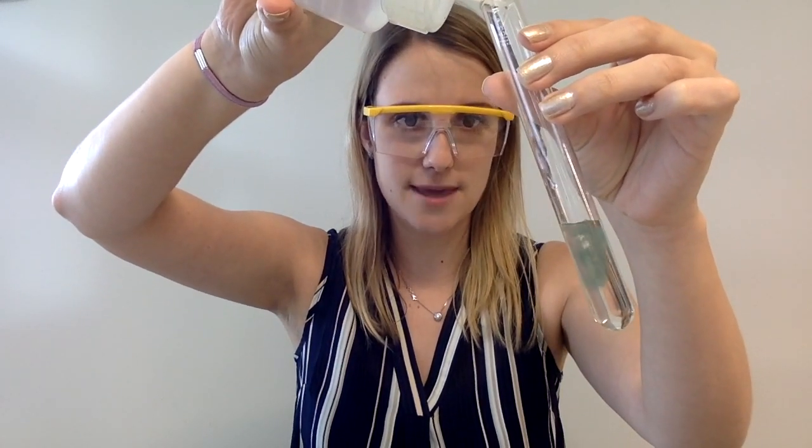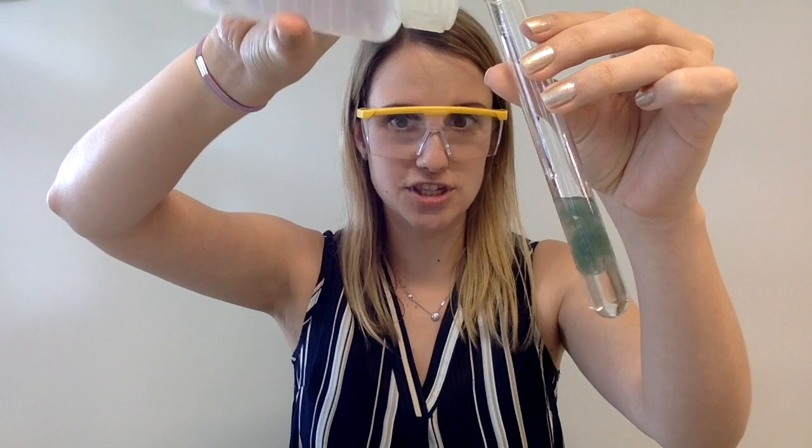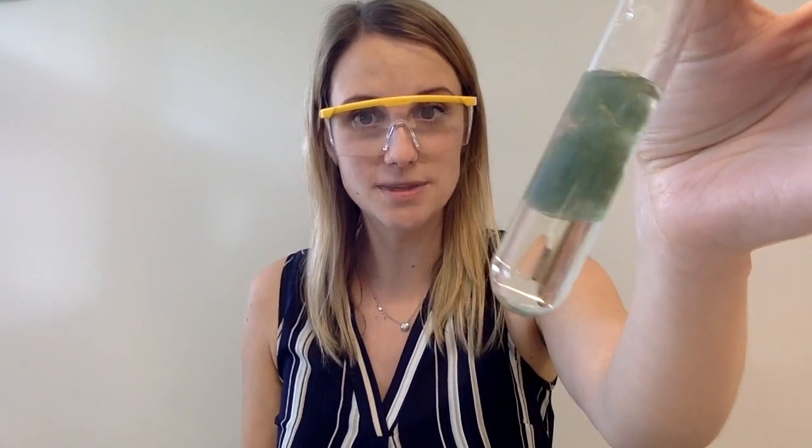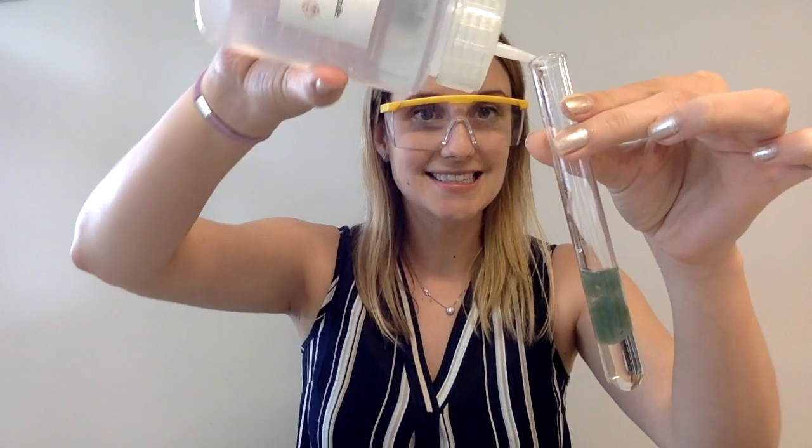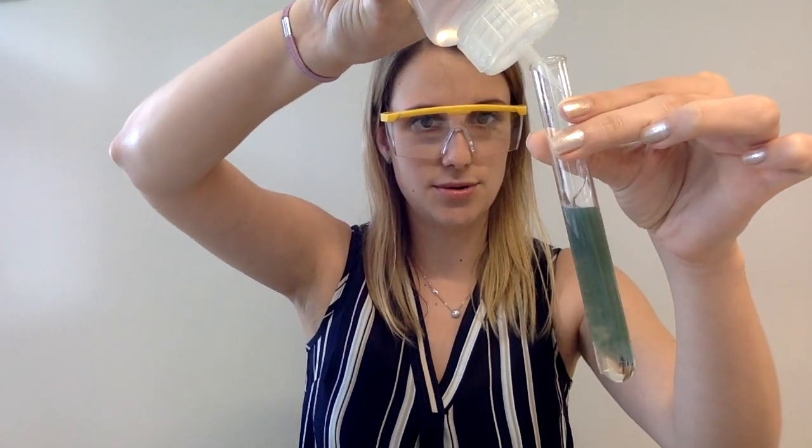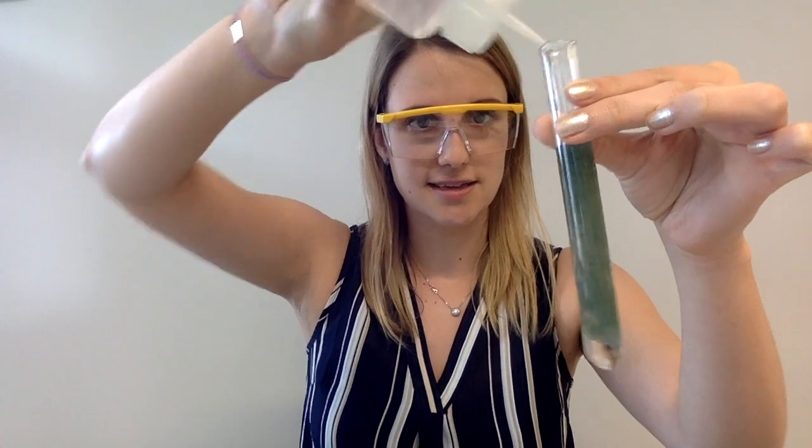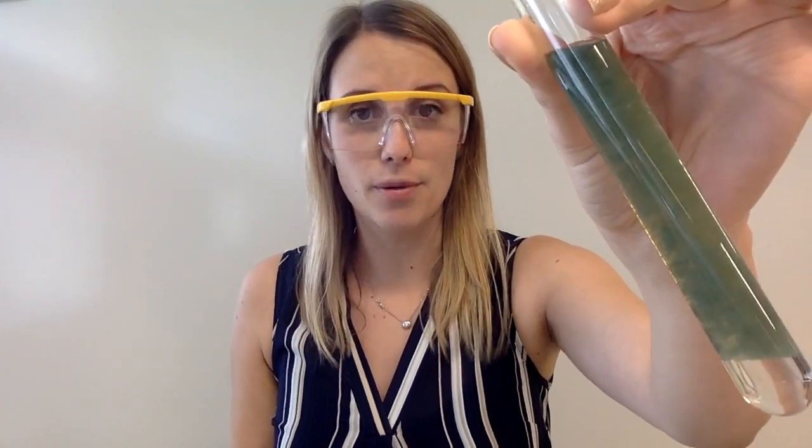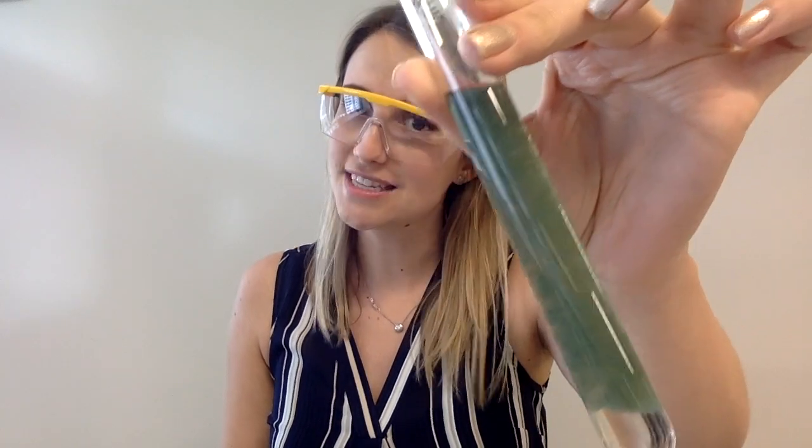So hopefully you can see that it's making a green precipitate, that's a green solid product that's being formed. And if I add an excess of sodium hydroxide, then you can see that it is completely insoluble in excess and it remains as a green precipitate.